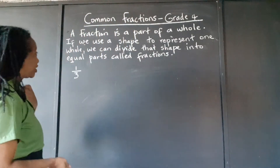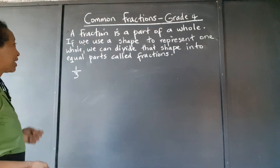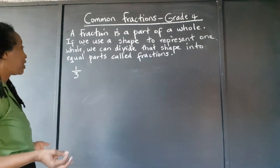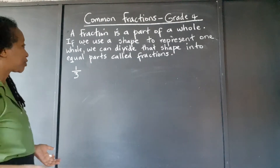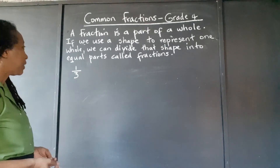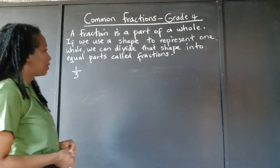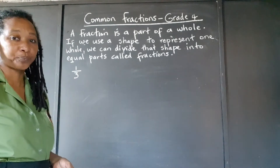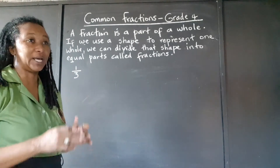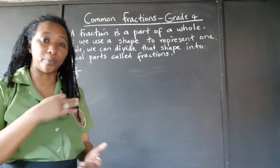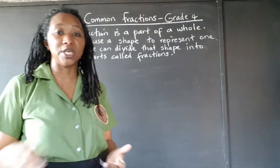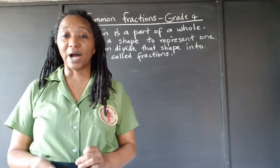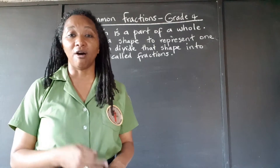Let's look at the definition. A fraction is a part of a whole. If we use a shape to represent one whole, we can divide that shape into equal parts called fractions. So a fraction is when you get one whole thing and you cut it up into equal parts. Each of those parts is a fraction of the whole.